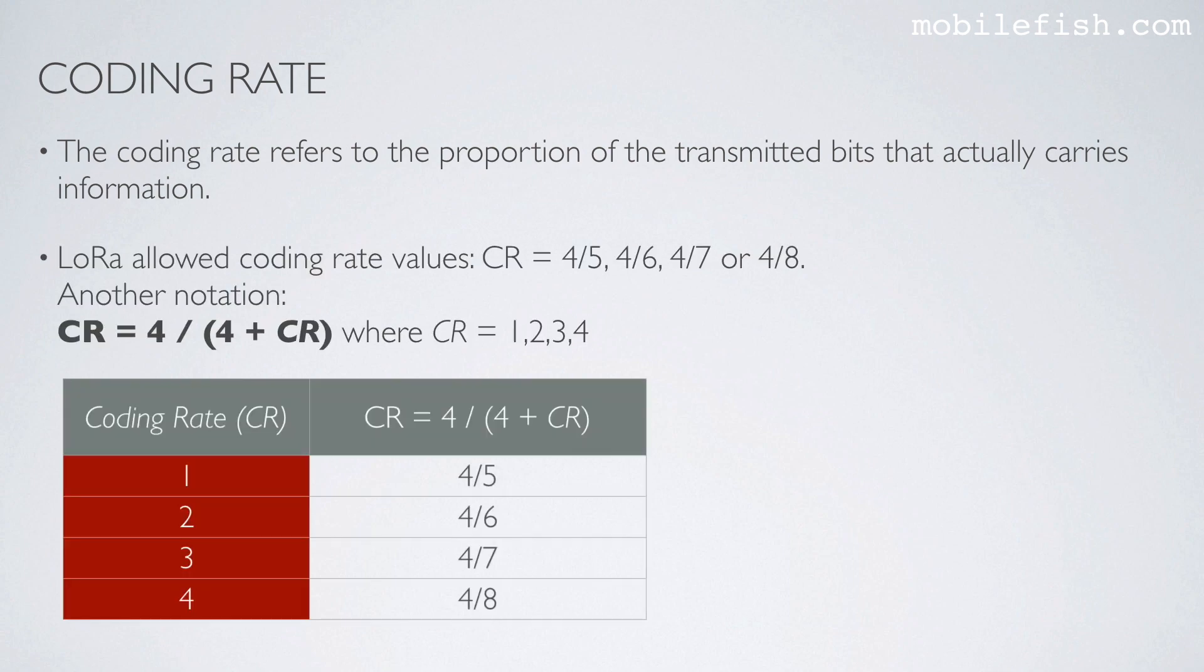LoRa allowed coding rate values are 4/5, 4/6, 4/7, or 4/8. Another notation: CR = 4/(4+CR) where CR = 1, 2, 3, or 4.